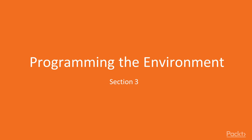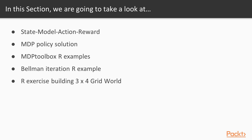Here we begin the third section of our video, Programming the Environment. In this section, we will first introduce the key concepts which comprise a Markov Decision Process, or MDP. We've talked about state, action, and reward, so we'll focus on the model or the transition model. Then we'll look at an MDP policy solution to our running two-by-two grid example using R.